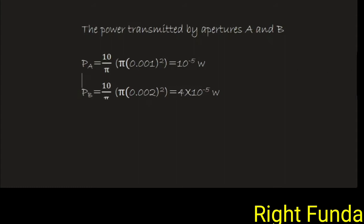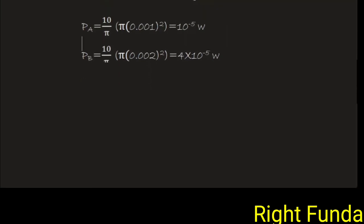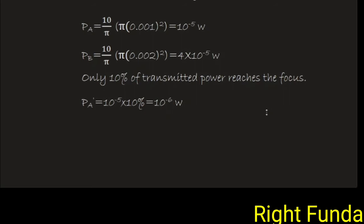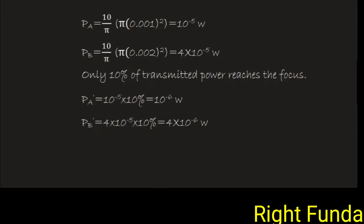As they pass through the lens system, only 10 percent of rays are focused at the focal point, as given. Otherwise we usually assume it to be 100 percent, but in this question 10 percent is given. So let us calculate how much exact power is there. PA dash equals 10 percent of this, equals 10 to the power minus 6 watt. And PB dash equals 4 times 10 to the power minus 6 watt. These are the two incident powers at that point.